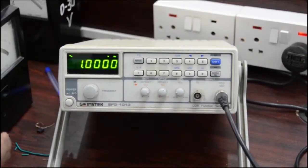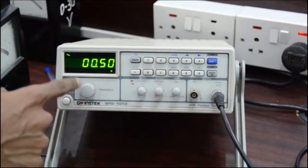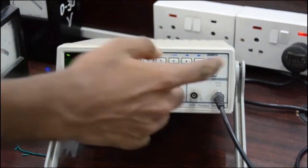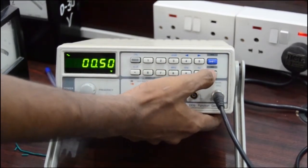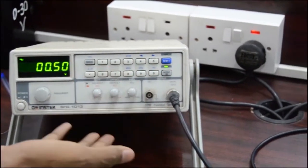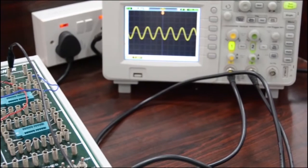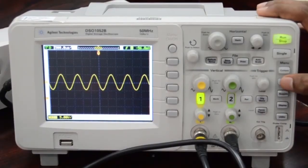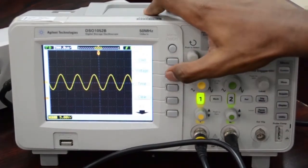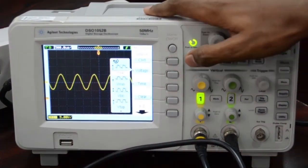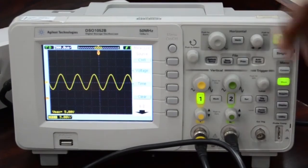And the power is plugged on. Now we apply input sine wave of frequency 1kHz and voltage 0.5 volt. Now let's switch on the output of the function generator. We can see the output on the CRO. Now let's measure the voltage of the output waveform on CRO.